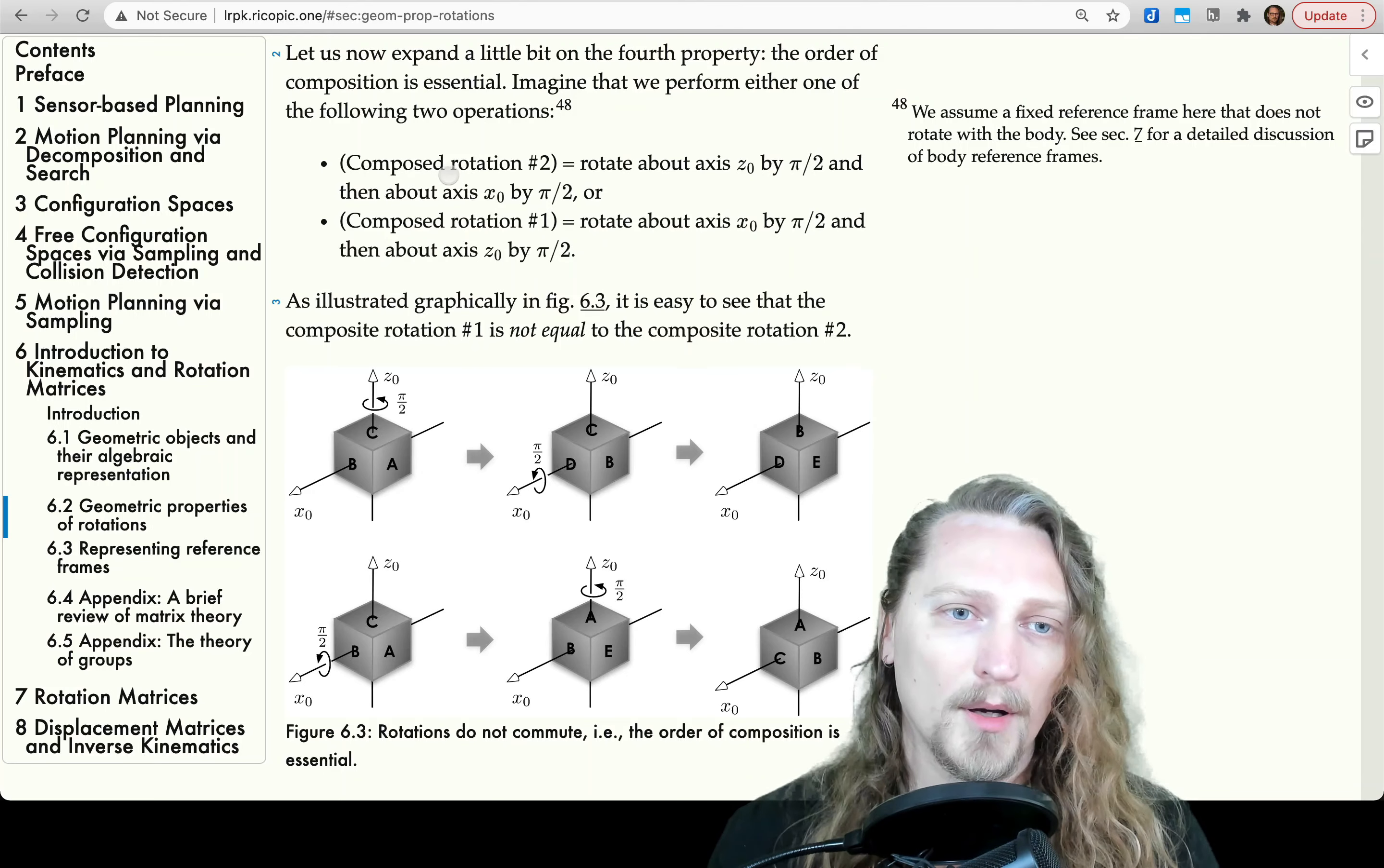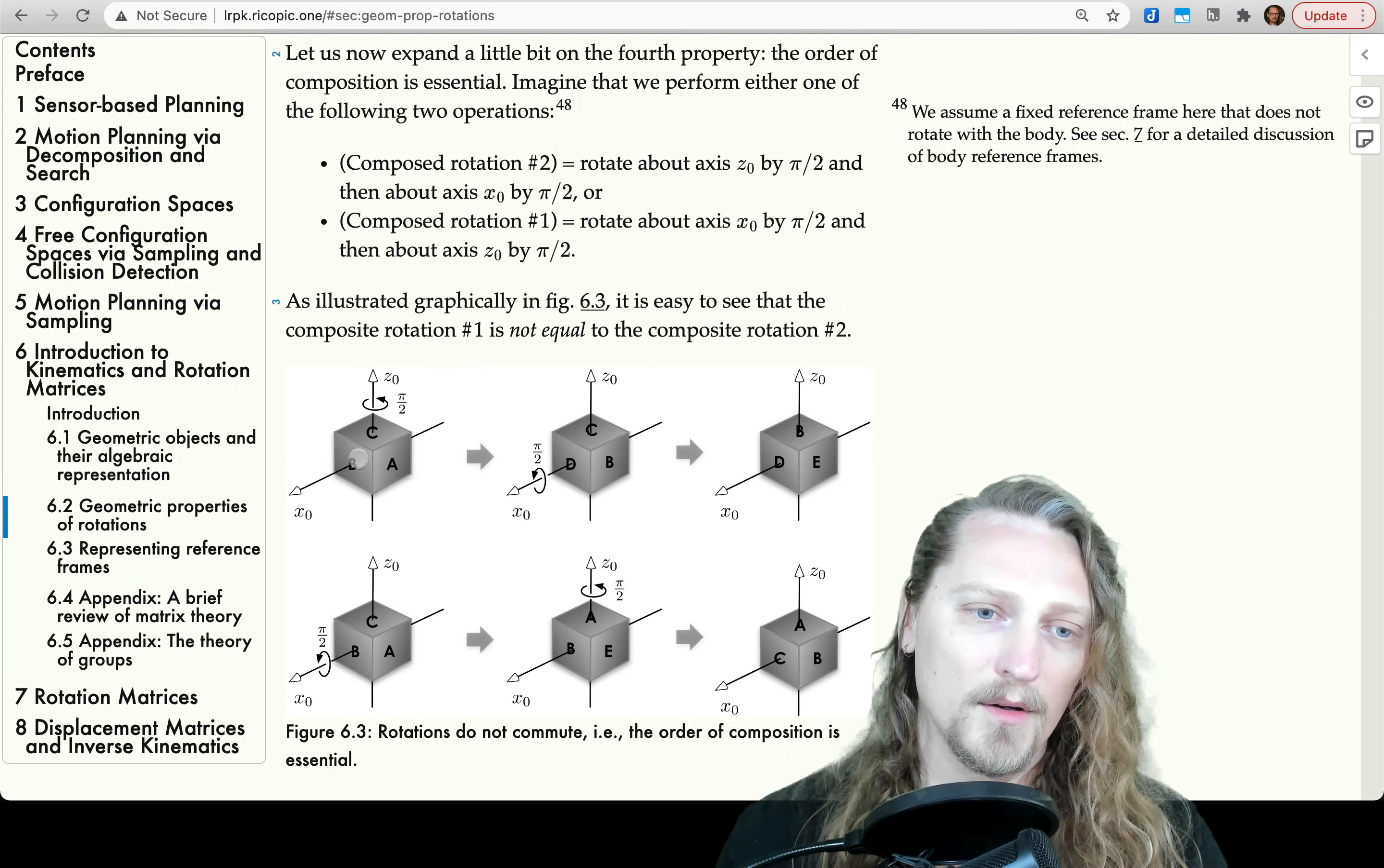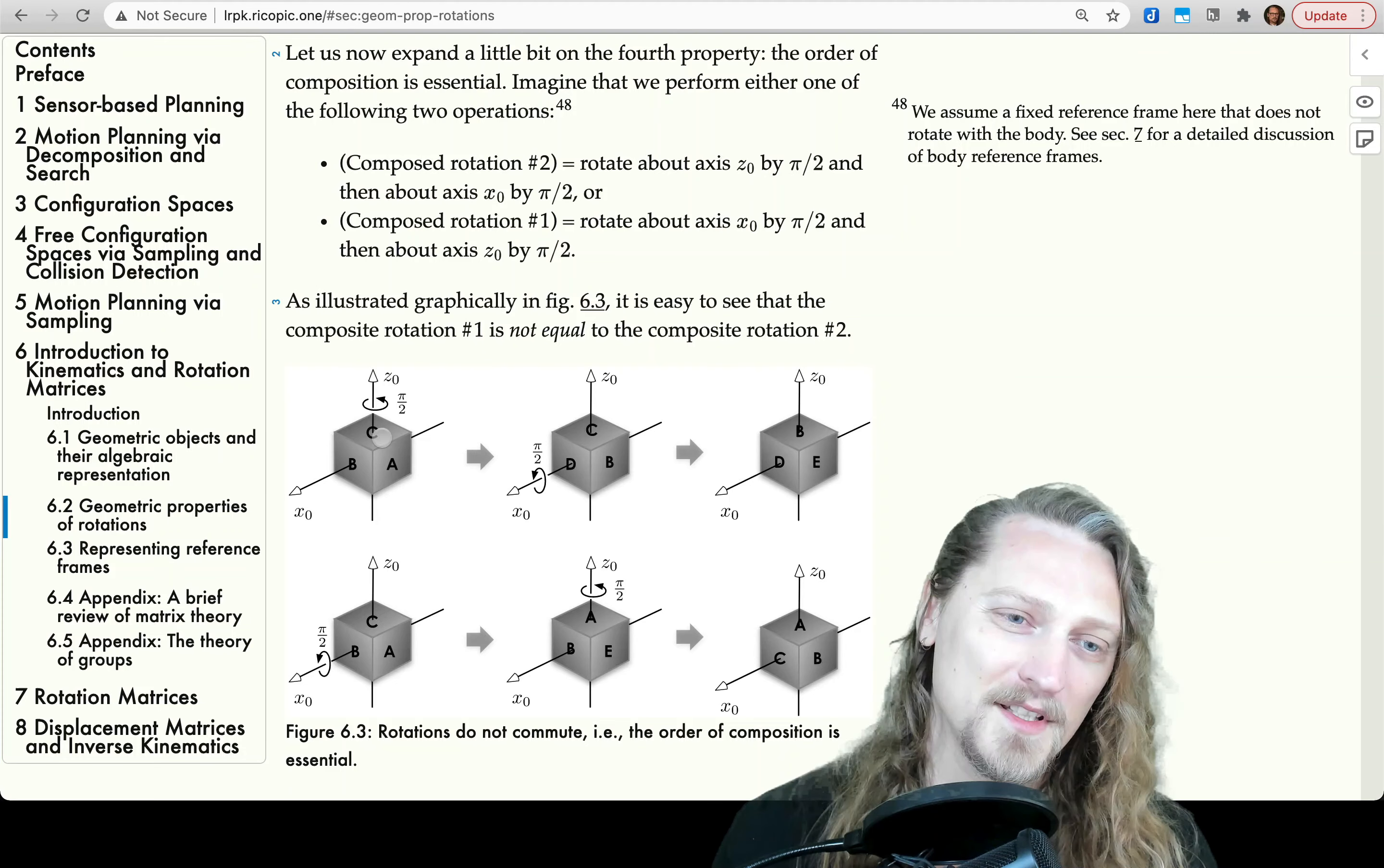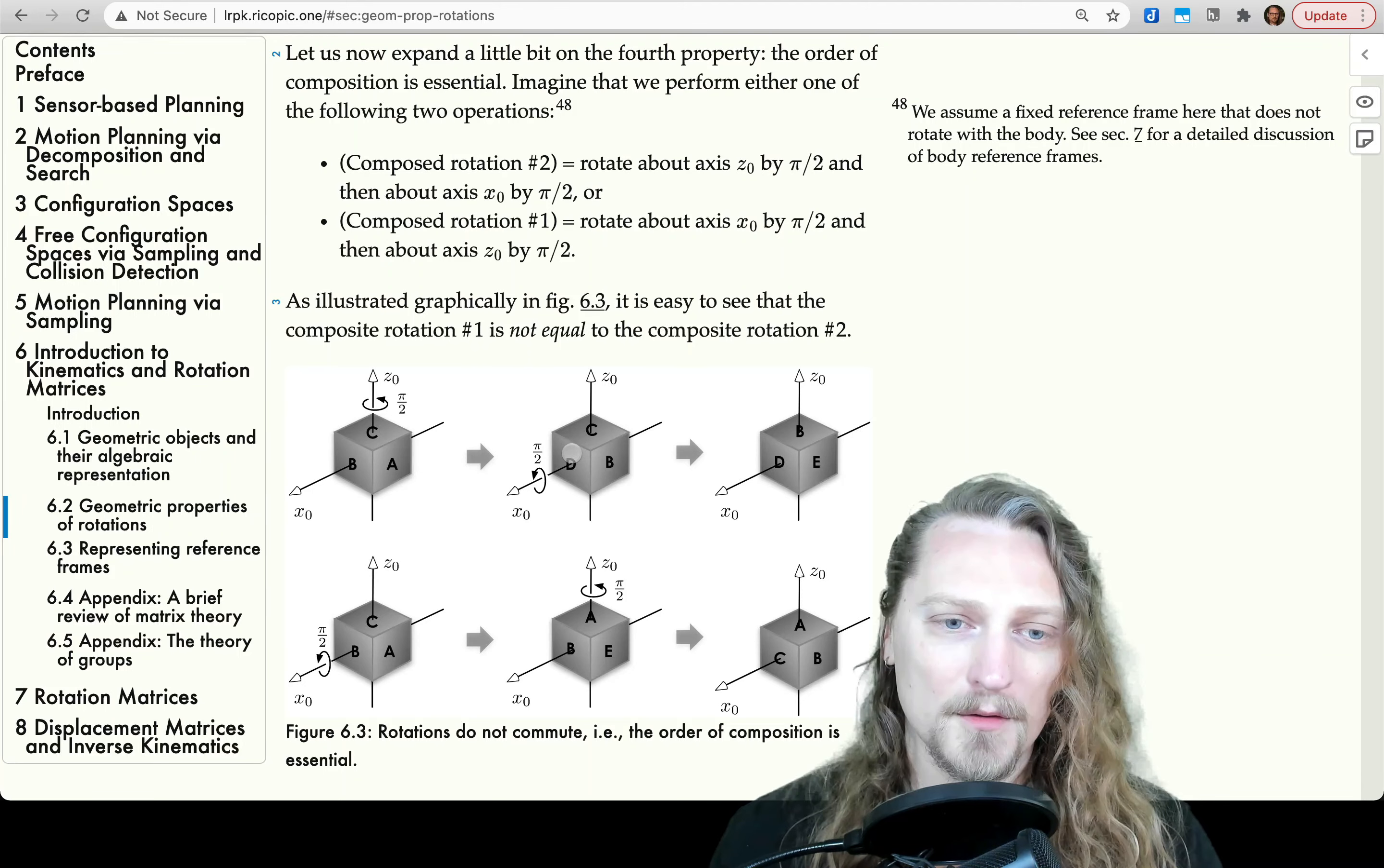So, composed rotation number two is rotate about axis z0 by pi over 2 and then about axis x0 by pi over 2. So, z0 first, then x0. So, you see that along this first row in the figure, we see a rotation. The sides of this cube are labeled a, b, c, d, e, f. You can only see a, b, and c from this view. We first rotate in this composed rotation number two, as it's called. We first rotate about z0 by pi over 2, 90 degrees.